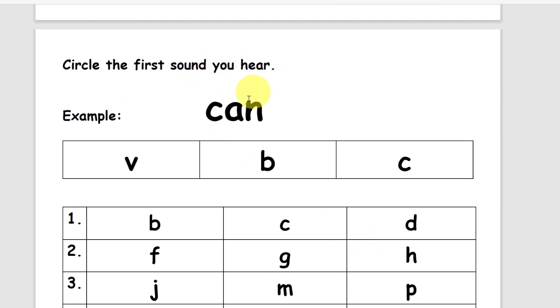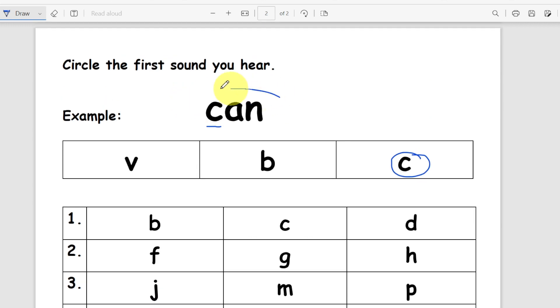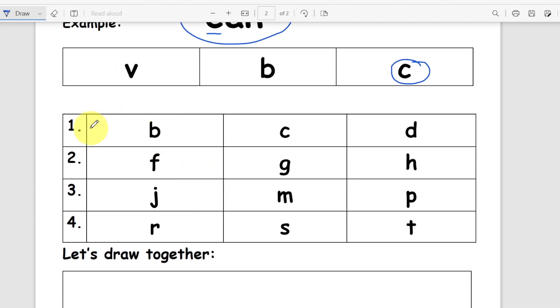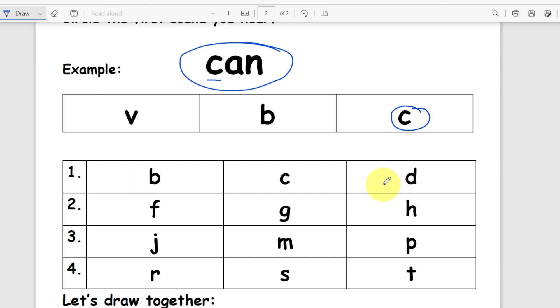Circle the first sound you hear. So for example, let's do this one together. Can. What is the first sound of can? It's kuh. Right here, right? So which one's kuh? See. Alright, but later you will not see this word. You can only hear me say it. So it's gonna be a little bit harder. Number one, let's try this together. Bag. So I said buh. So you circle the buh sound right here. Number one, bag.